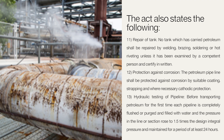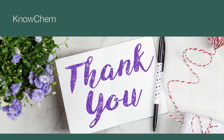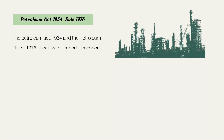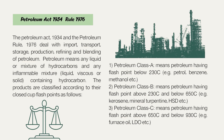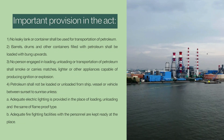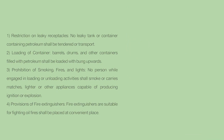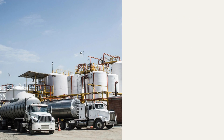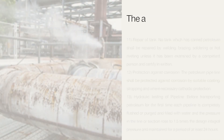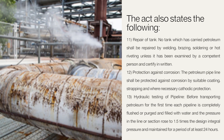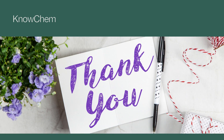Lastly, regarding hydraulic testing of pipelines: before transporting petroleum for the first time, each pipeline is completely flushed or purged and filled with water, and the pressure in the line or section is raised to one and a half times the design integral pressure and maintained for a period of at least 24 hours. So that's all for this video, where we discussed the Petroleum Act 1934 and Rule 1976 and some important provisions of the act. Hope you liked this video. Thank you for watching, and for more videos related to chemical industry, industrial safety, process engineering, process safety, and chemical engineering, you can subscribe to this channel.